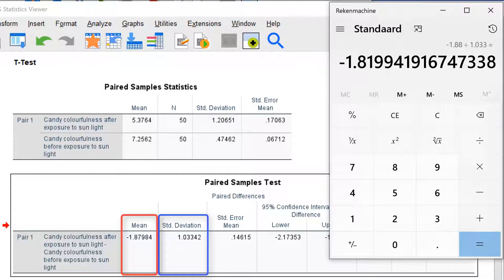According to the rules of thumb, this is a strong effect, because it is closer to 0.8 than to 0.5. Note that Cohen's d can be over 1. And also, ignore a negative sign if you interpret effect size.